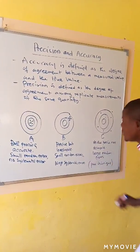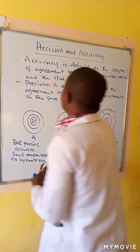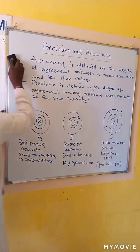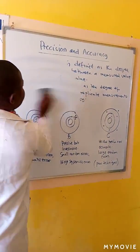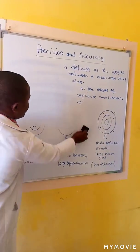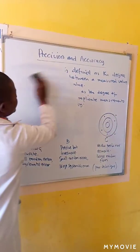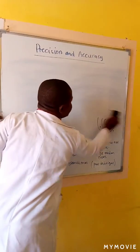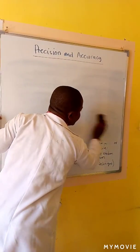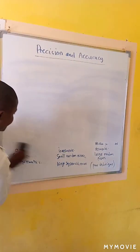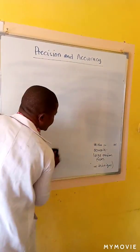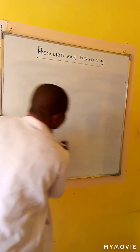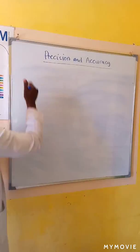So this is how we can differentiate between accuracy and precision. These are random errors and systematic errors.